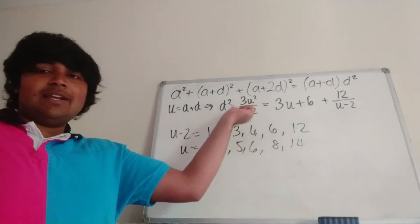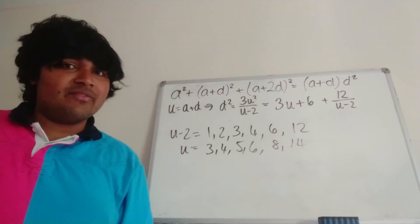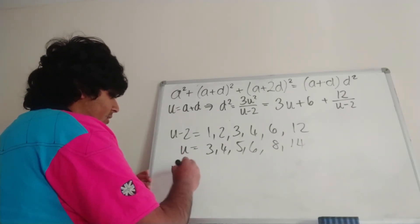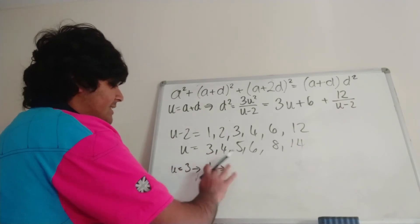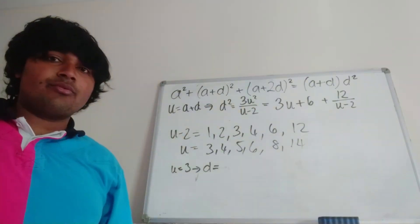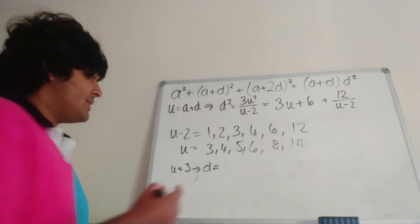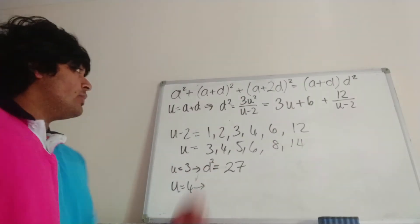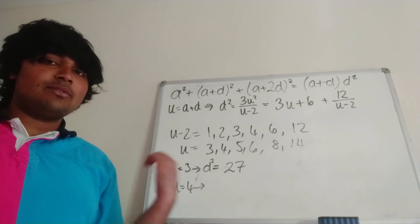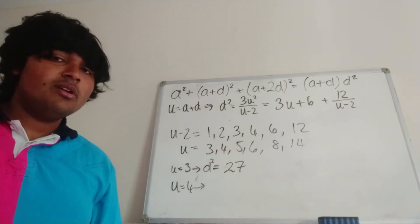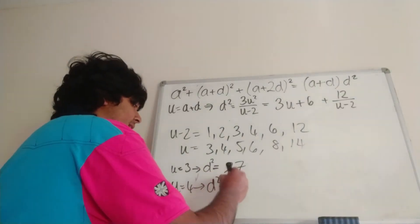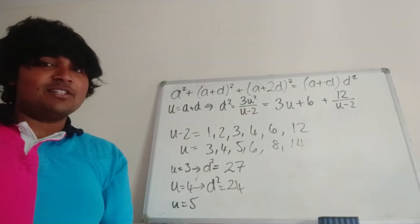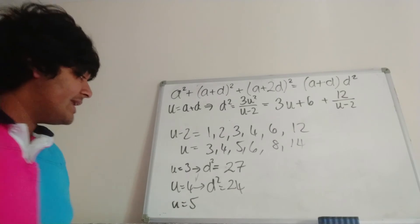Now we plug each value of u into d squared equals 3u squared over (u minus 2) and check for perfect squares. When u equals 3: d squared equals 3 times 9 over 1 equals 27 — not a perfect square, no integer solution. When u equals 4: 3 times 16 over 2 equals 24 — not a perfect square. When u equals 5: 3 times 25 over 3 equals 25 — the 3s cancel, giving d squared equals 25, which is a perfect square, giving us two values: d equals plus or minus 5.